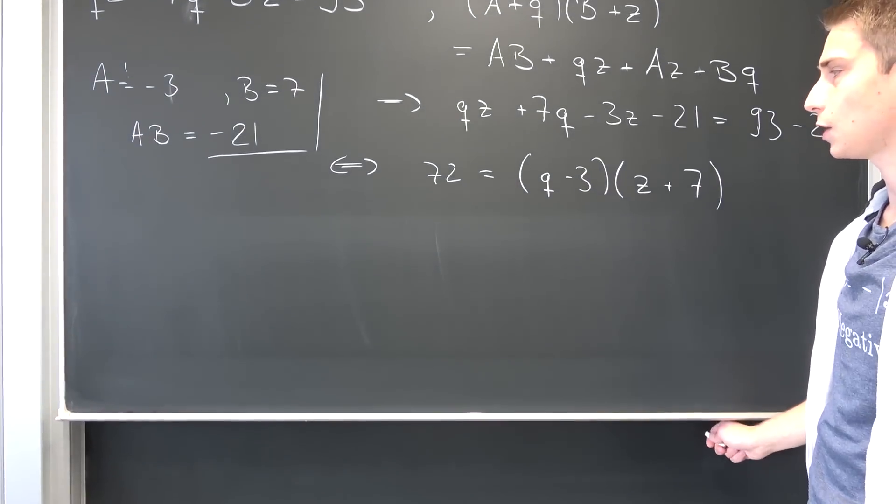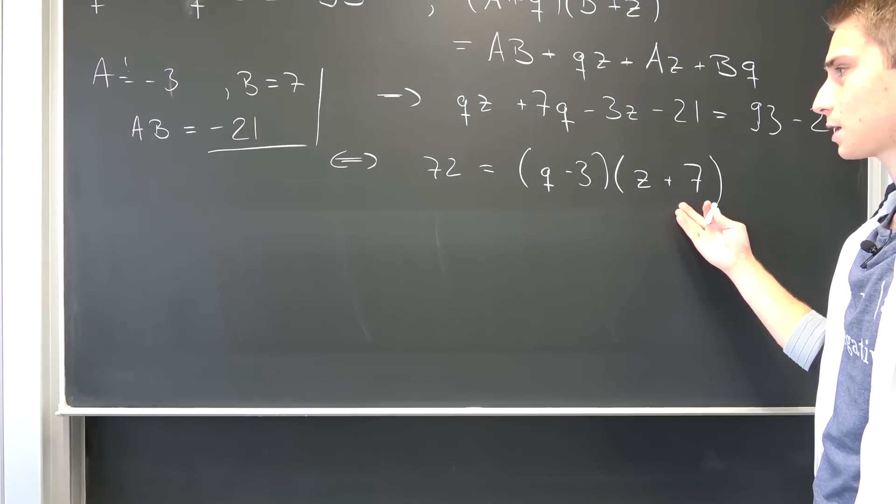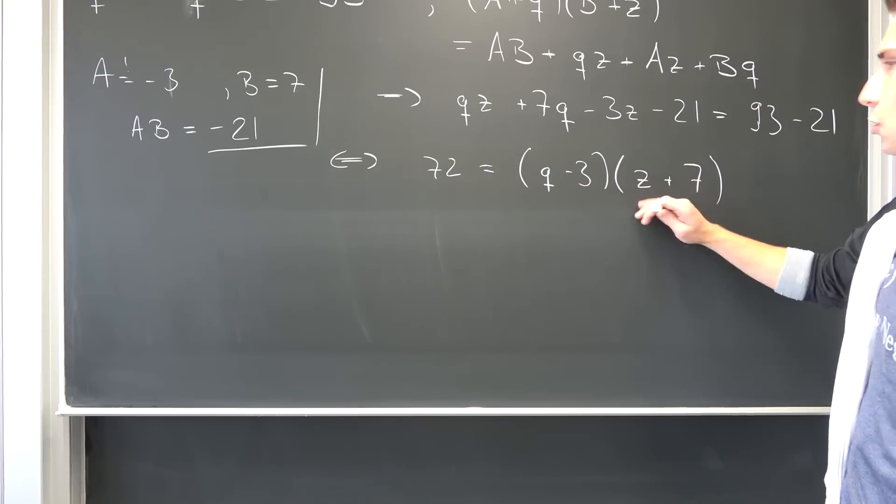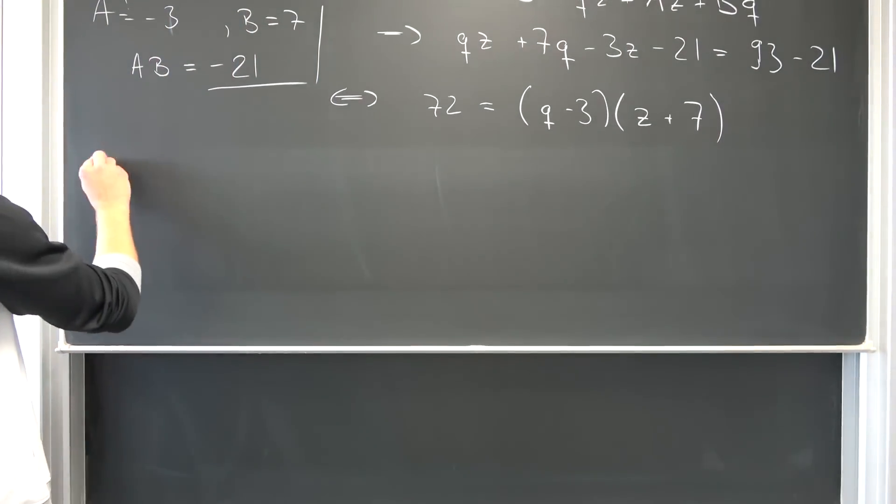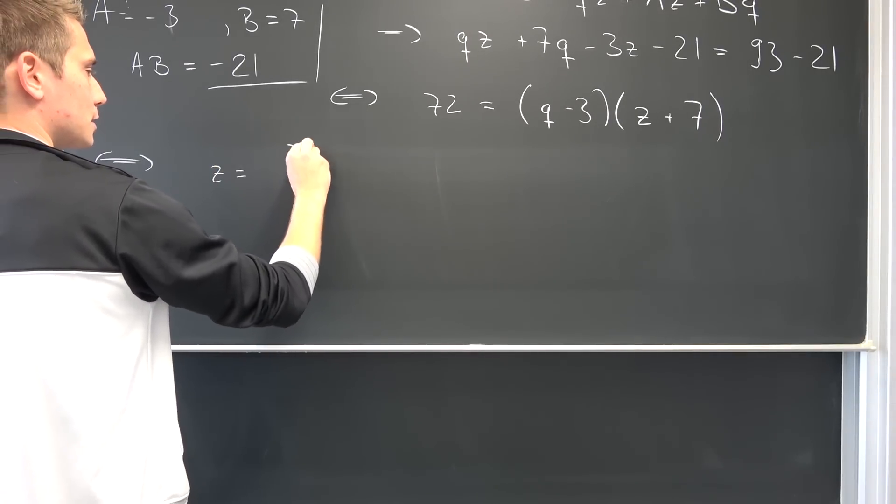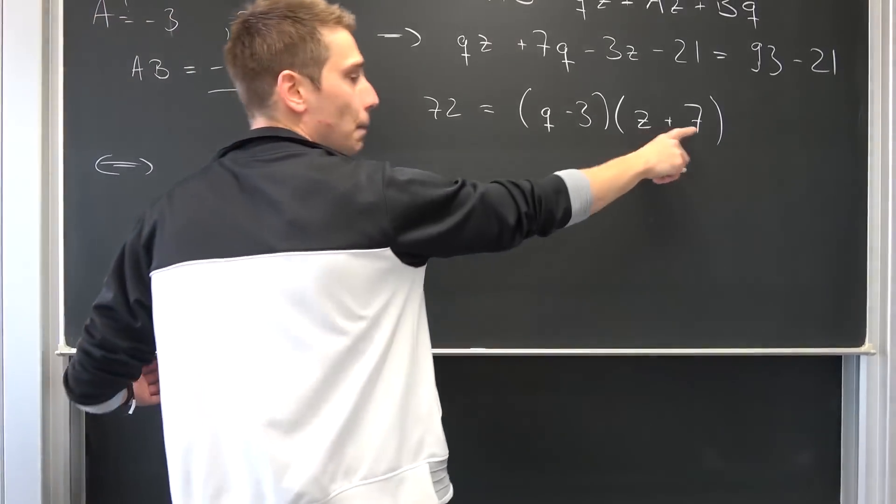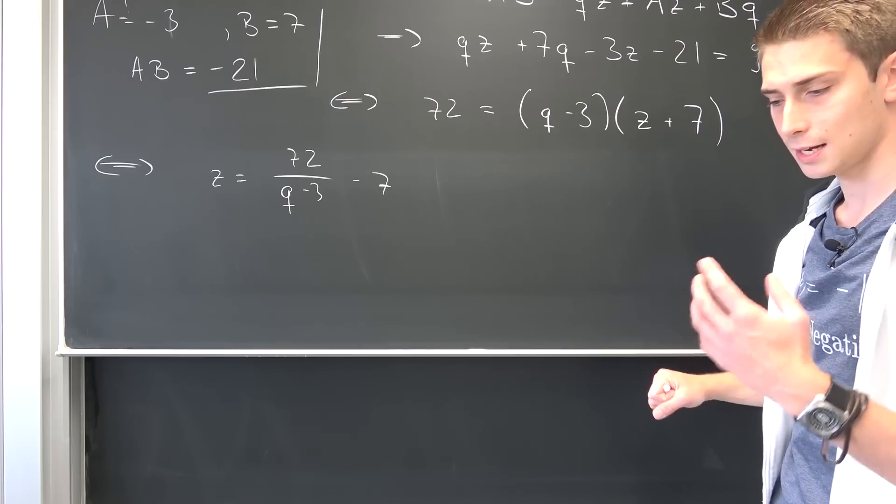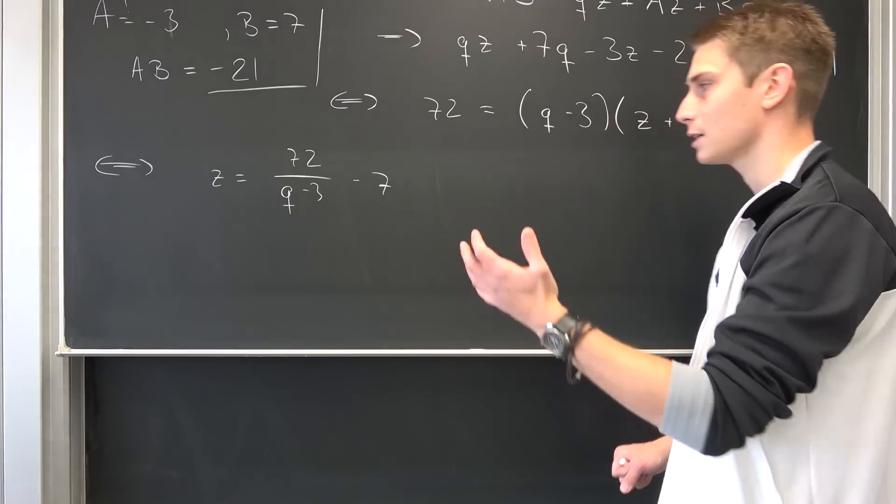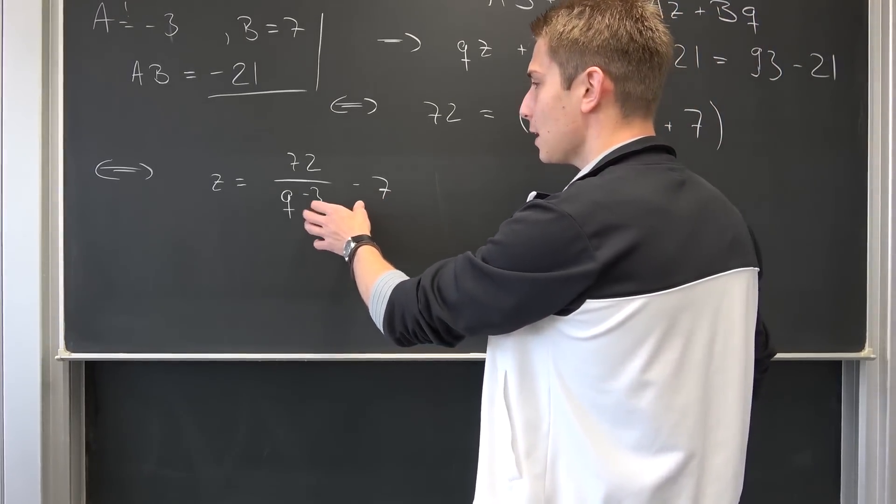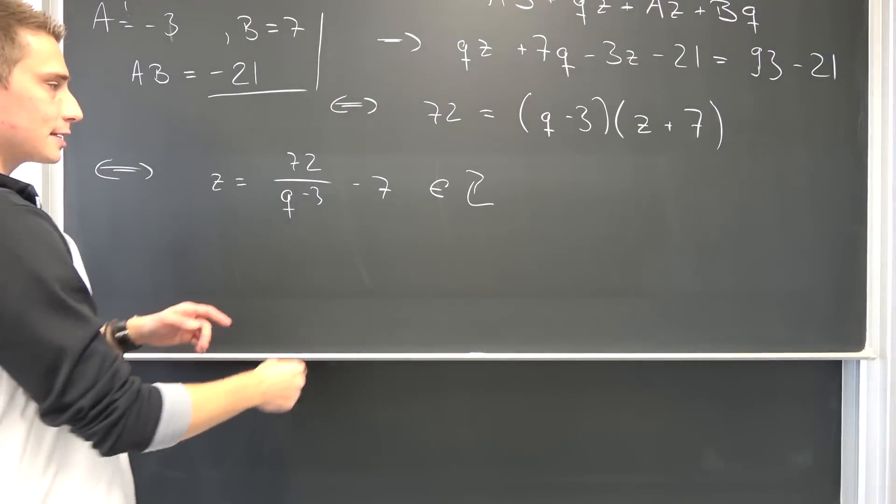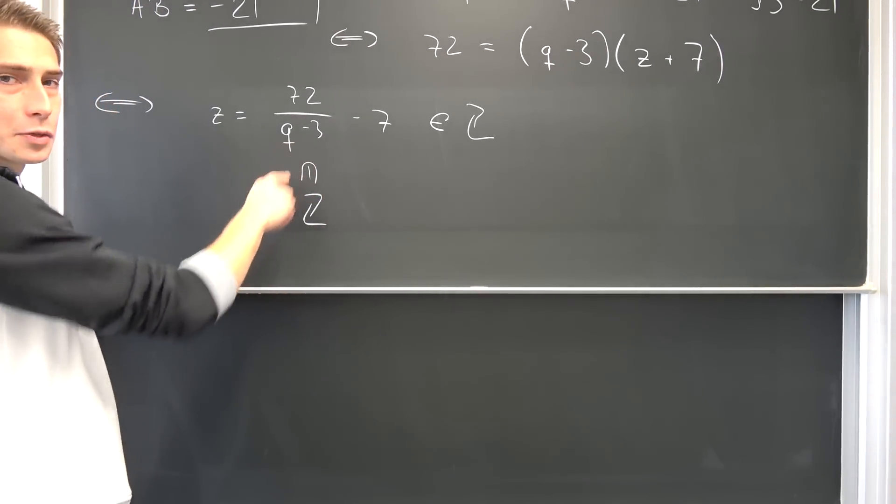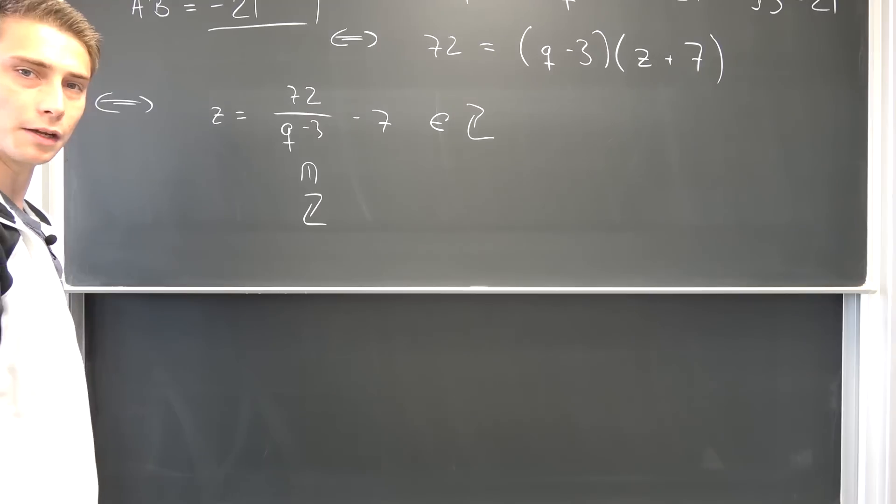And now we can start off actually finding stuff out. I'm going to solve for z for example. This is something we can do. It really doesn't quite matter what we choose. I'm going to solve for z right here. Meaning we're going to divide by (q - 3). z is thus 72 over (q - 3) minus 7. Now z is supposed to be out of the integers. Positive and negative integers are closed under addition, meaning they also act nicely under subtraction. Meaning if this whole thing is supposed to be out of Z, then that means this is out of Z and this must be out of Z because the difference is also out of Z.